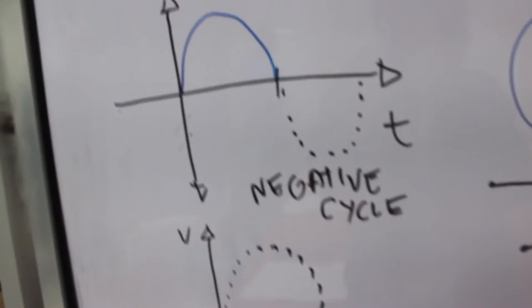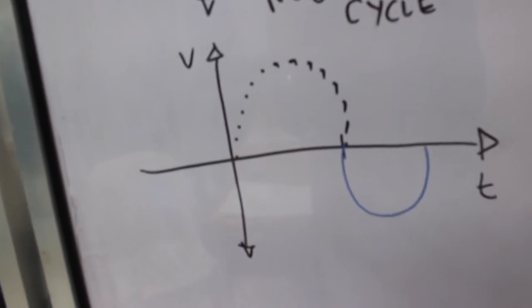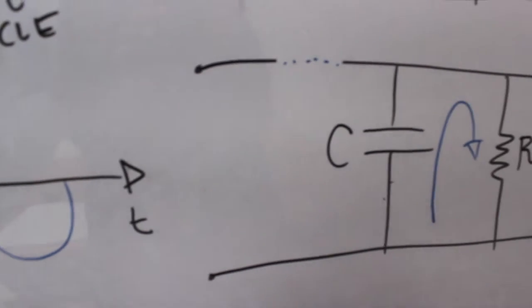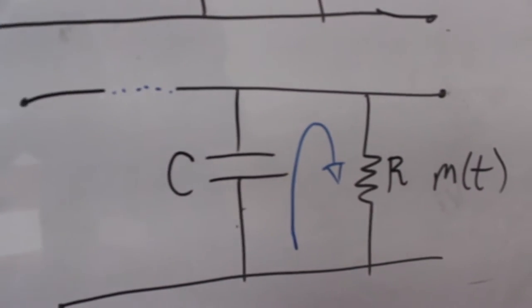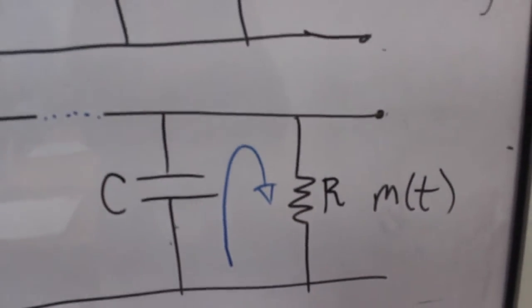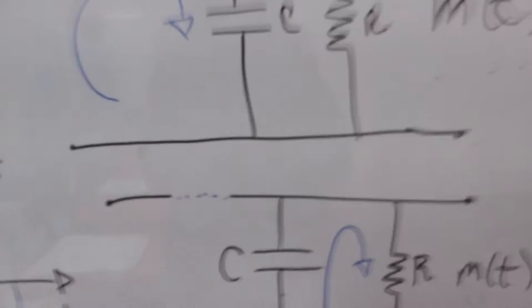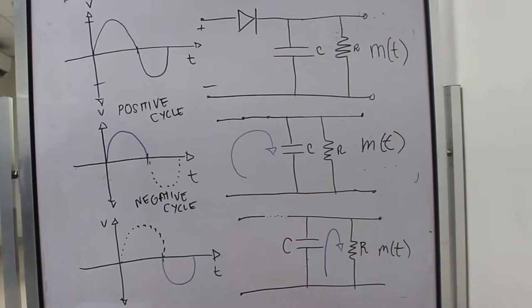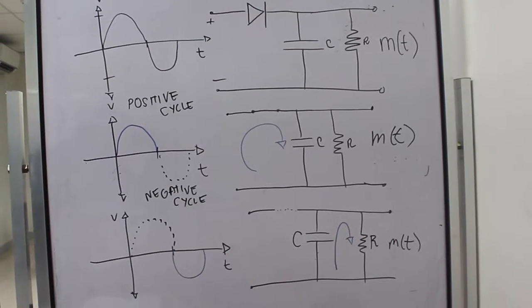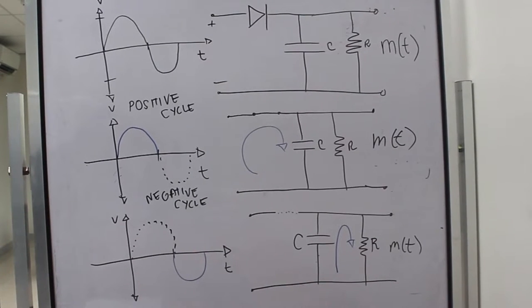At the negative half cycle of the input signal, the diode becomes reverse biased and the input disconnects from the output. At this point, the capacitor discharges slowly through the resistor R. On the next cycle, the diode becomes forward biased as the input signal exceeds the voltage across the capacitor. Thus, the process repeats.